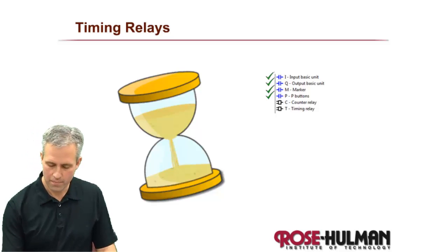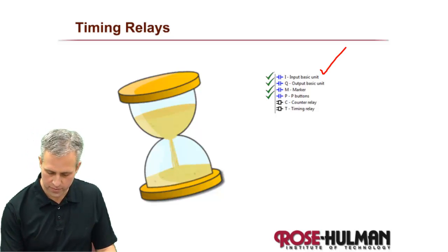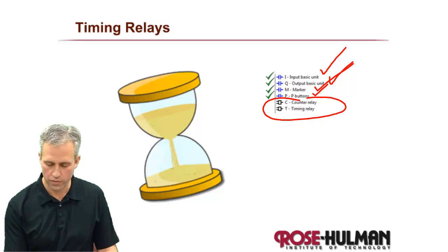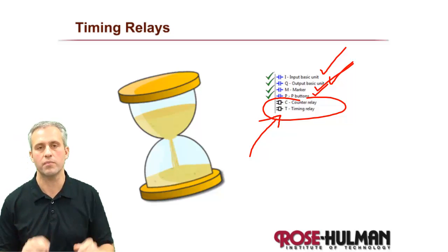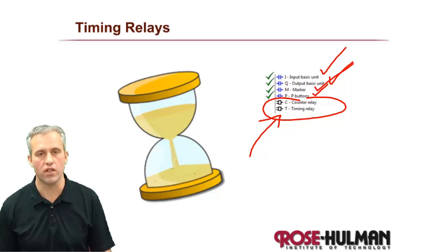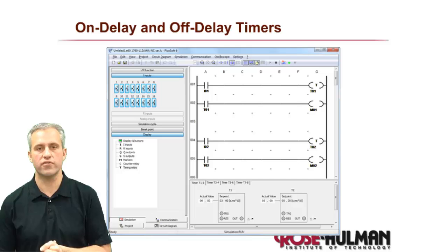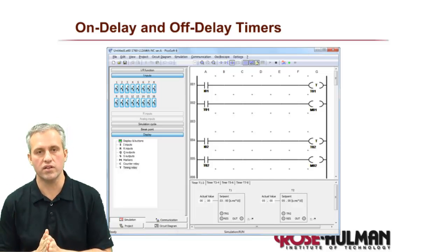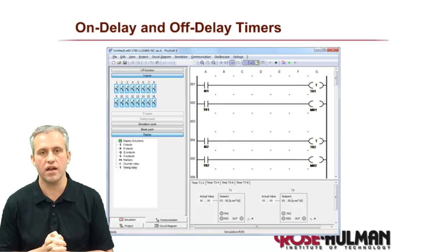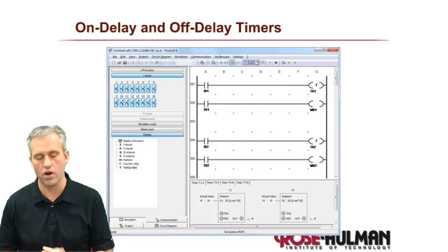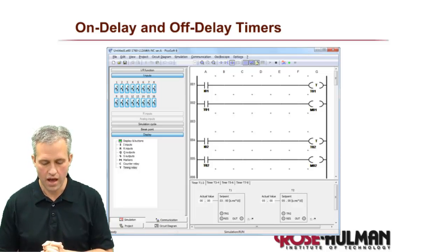Welcome back. We are now masters of inputs — push buttons and markers — from yesterday. We've only got two types left. The one we're going to tackle here, kind of out of order, is timers. Timing is important for a lot of different applications. We're going to learn about timing relays. There are two types: on delay and off delay.